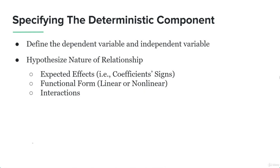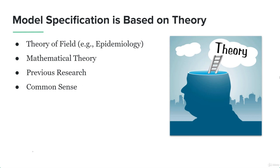Interactions basically involve the prediction step — we're going to interact different variables and see how our function or equation performs under those interactions. Model specification is based on theory — for example, the theory of a field such as epidemiology. Secondly, it's based on mathematical theory and previous research that researchers and scientists have conducted. And fourthly, it's common sense.